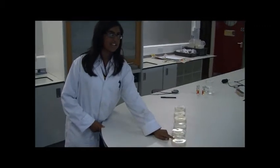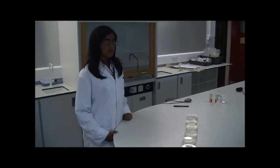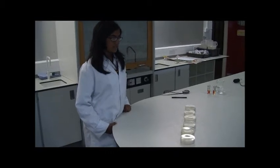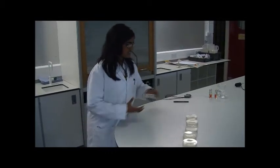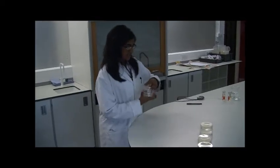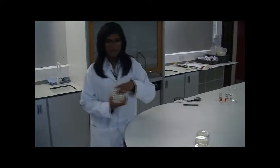I have shone UVC light on each agar plate at an interval of five seconds. So now I have the control at zero and then 5, 10, 15, 20, and 25 seconds. I'm now going to place all 12 plates into the incubator. I've repeated each plate twice because I want to ensure that my results are reliable.